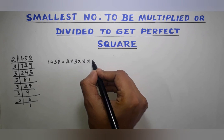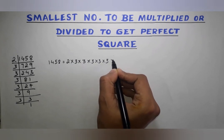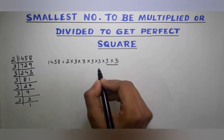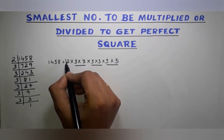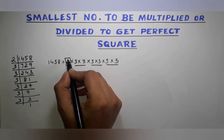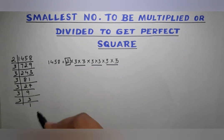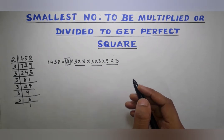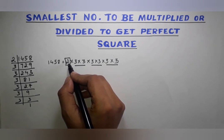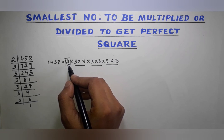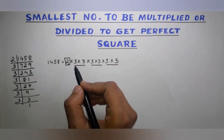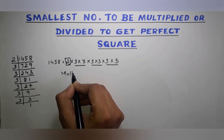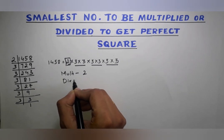So I can write 1458 as 2 × 3 × 3 × 3 × 3 × 3 × 3. Now I start pairing up the factors. This is my first pair, second pair, and third pair. But I don't have any pair for the number 2 — I have only one 2. So either I need one more 2 to complete a pair, or I remove this 2 entirely. To multiply, I need one more 2; to divide, I remove this 2.